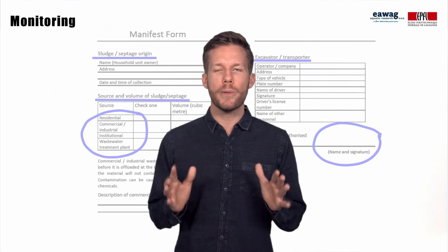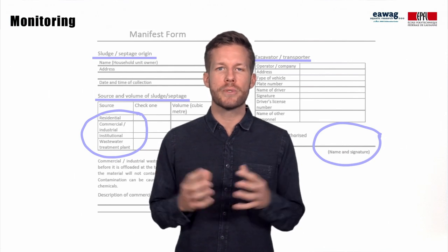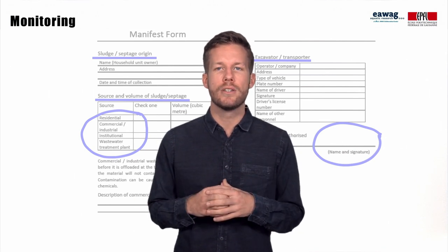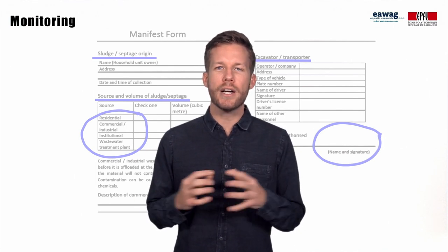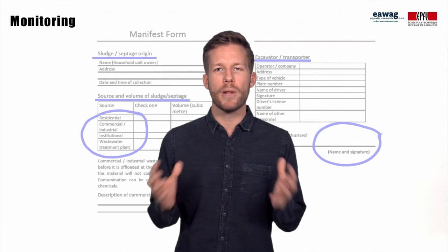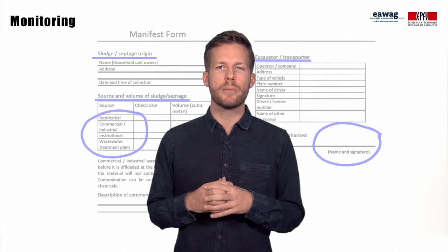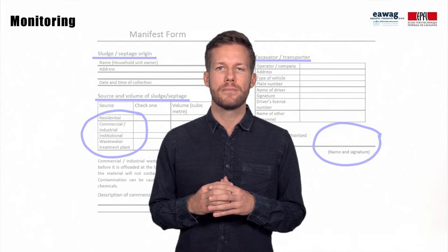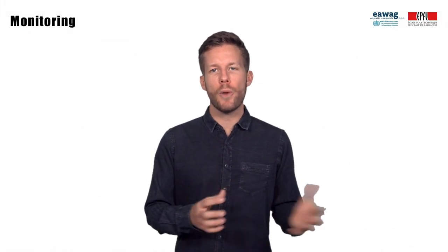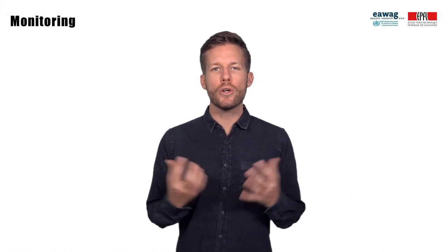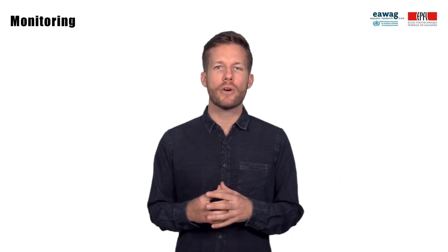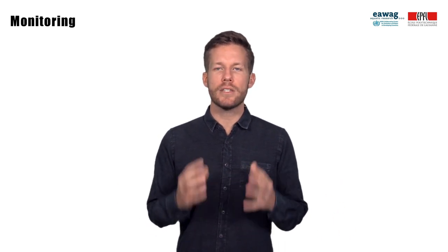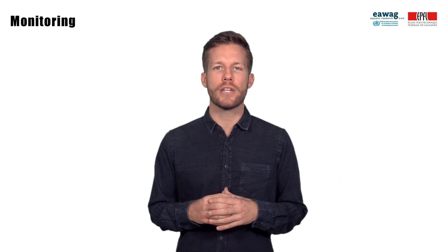The system should always be complemented with visual observations such as the sludge color. Any color other than brown or black could indicate industrial contamination, which could disrupt the treatment operation. A signature of the manifest form by the treatment operator could also serve as proof to the client or government authority that the service provider discharged at a legal location.